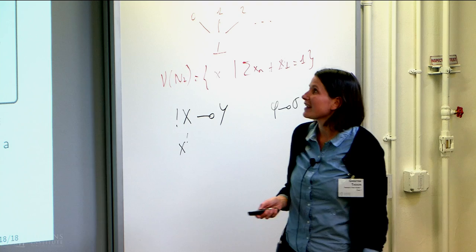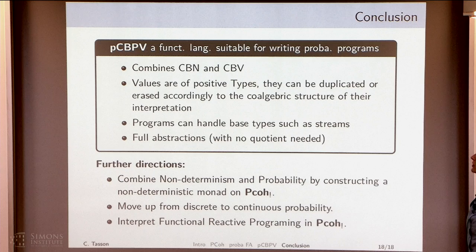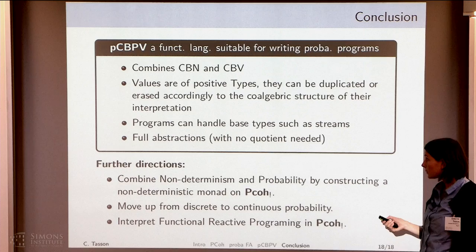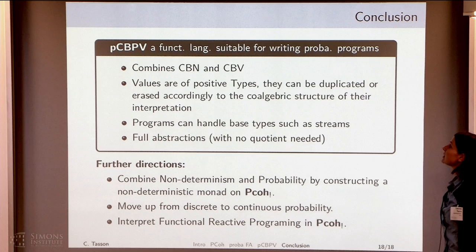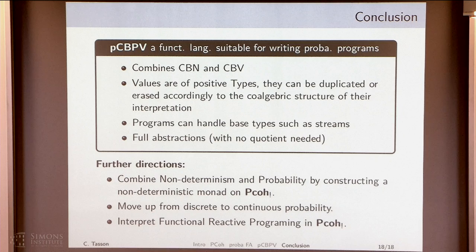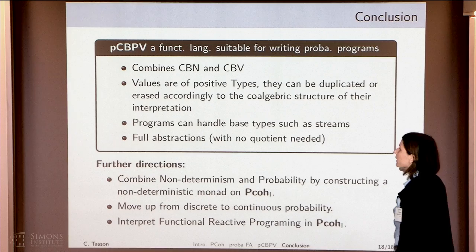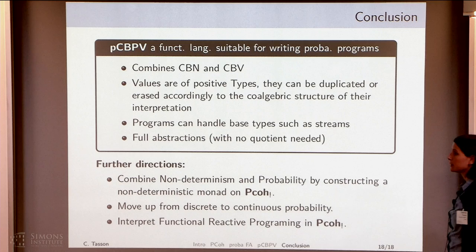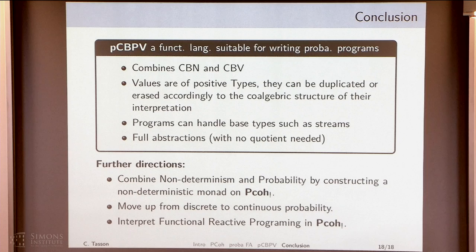I think I can conclude. We were looking for a functional language suitable for writing probabilistic programs. We finally found probabilistic call-by-push-value, an extension of Paul Levy's call-by-push-value, which combines call-by-name and call-by-value. Values are of positive types so they can be duplicated or erased according to their comonoidal structure. Programs can handle base types such as NATs, streams, and other types. And we have full abstraction.